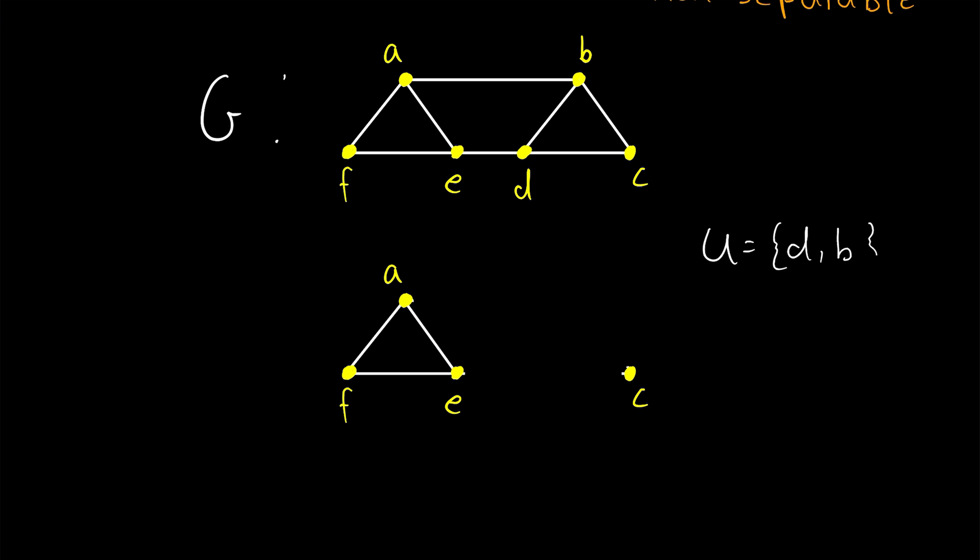So if we let U be the set containing the vertices D and B, the two vertices that we deleted from G in order to get from here to here, then we see that G minus the vertex set U is a disconnected graph.